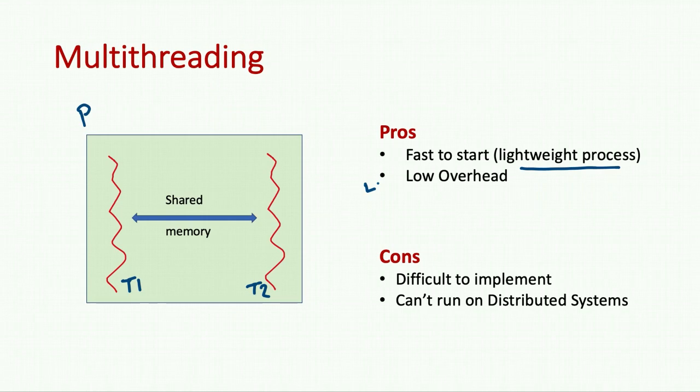Whereas in the case of processes, the OS needs to allocate many resources and it also needs to take care of security issues so that one process does not accidentally land into the space of another process. Processes have quite some overhead associated with them, which is not the case with threads.